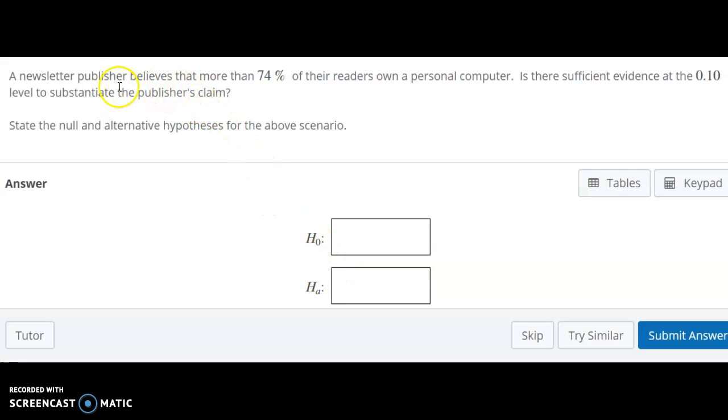So let's take a look at some specific examples. A newsletter publisher believes that more than 74% of their users own a personal computer. So this alpha significance level doesn't factor in directly to this. That'll come later in the null hypothesis test. Really, the only important number there is the 74.